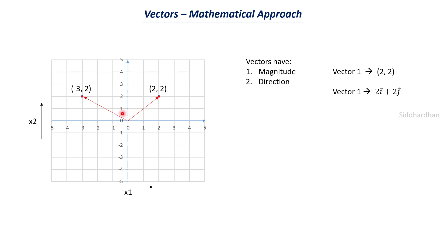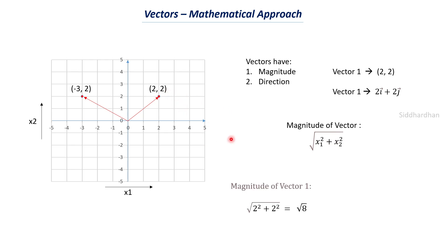Two vectors can have the same magnitude but different directions, or the same direction but different magnitudes. For example, a point at (4, 4) lies in the same direction as (2, 2) but has a greater magnitude. The magnitude of a vector is found using the formula: the square root of the sum of the squares of its coordinates. For the vector (2, 2), the magnitude is √(2² + 2²) = √8.